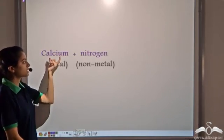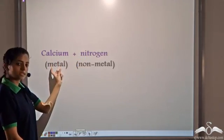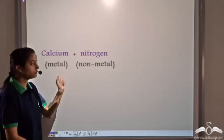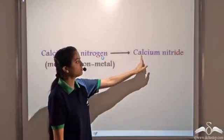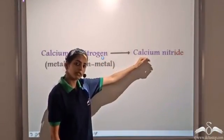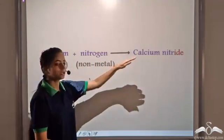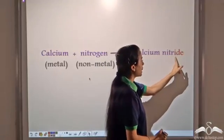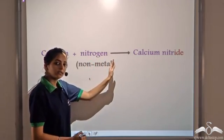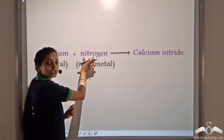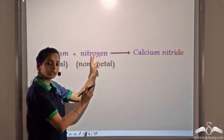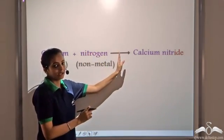Say we have a compound which has calcium and nitrogen. Calcium is the metal, nitrogen is the non-metal. So we read this compound as calcium nitride. The metal is written first — calcium — then the non-metal. The suffix "-ide" is added to the non-metal and it is merged with the name itself. So it becomes "nitride", not "nitrogen" followed by "-ide".